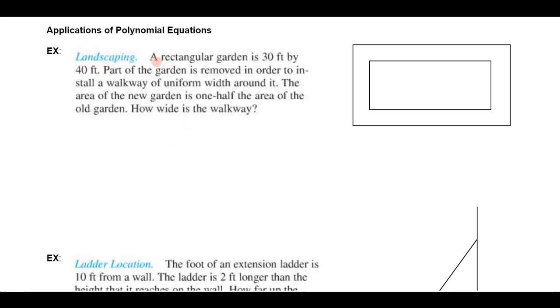Here's a problem. It says a rectangular garden is 30 feet by 40 feet and part of the garden is removed in order to install a walkway of uniform width around that garden. With any problem you want to immediately start off by organizing your information. If at all possible draw a picture.